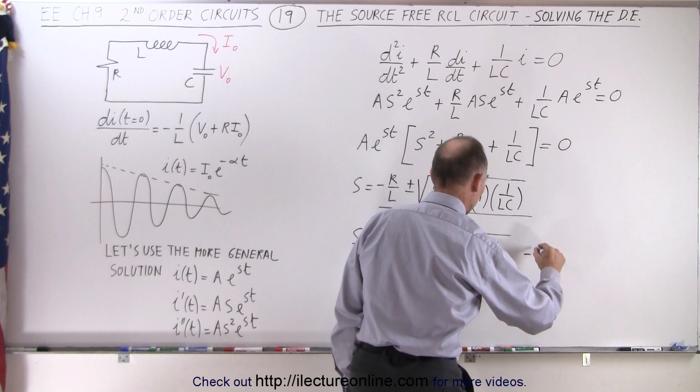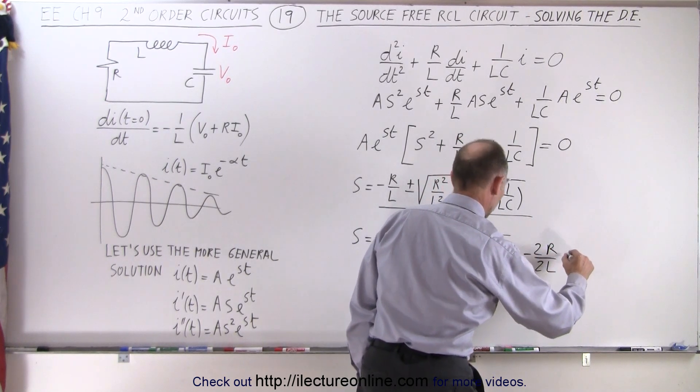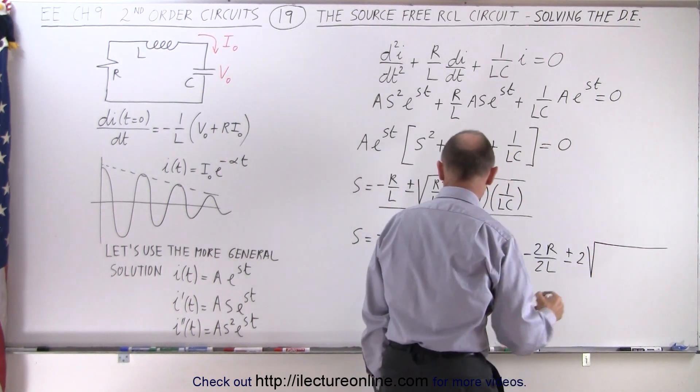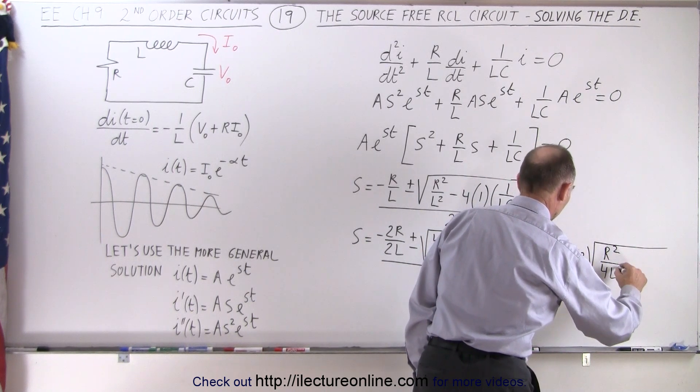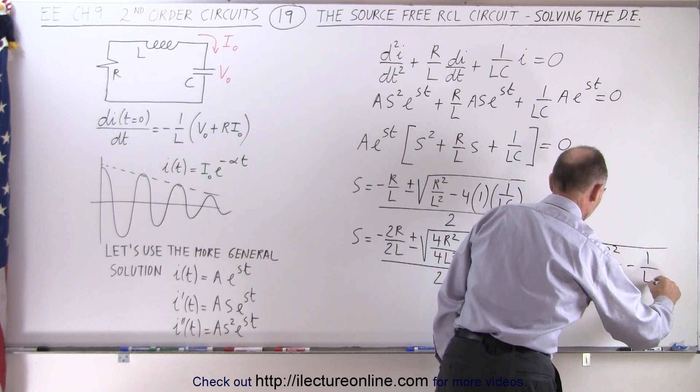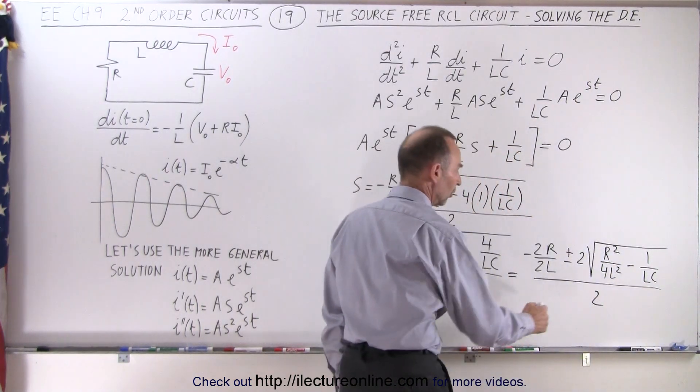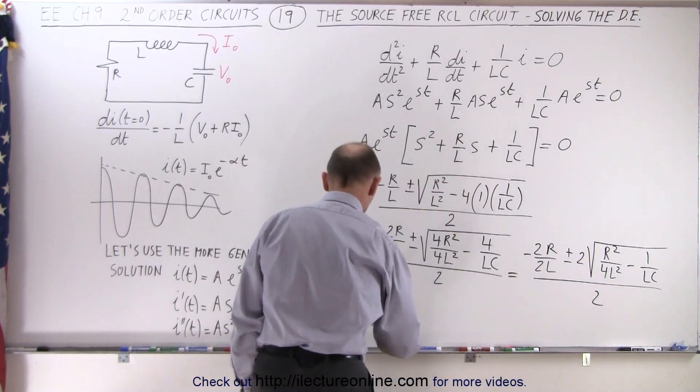That would be equal to minus 2r over 2l plus or minus 2 times the square root of r squared over 4l squared minus 1 over lc, all divided by 2.